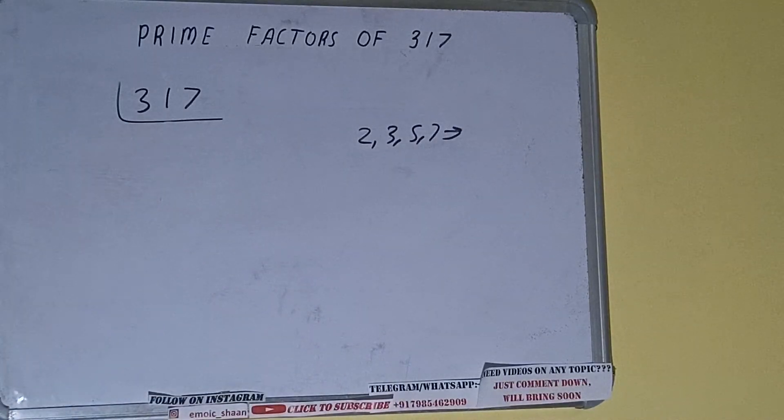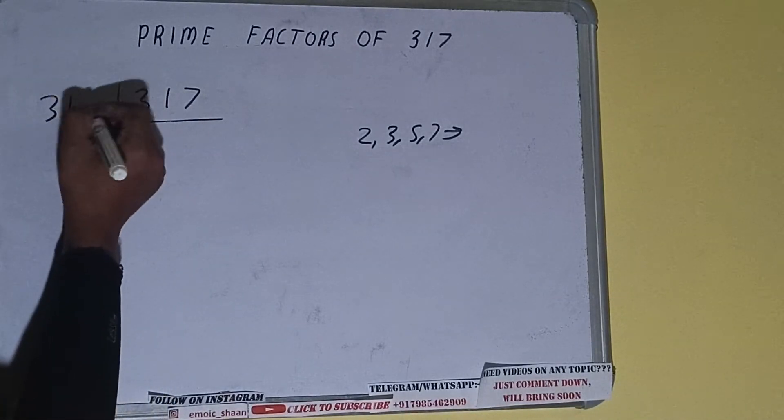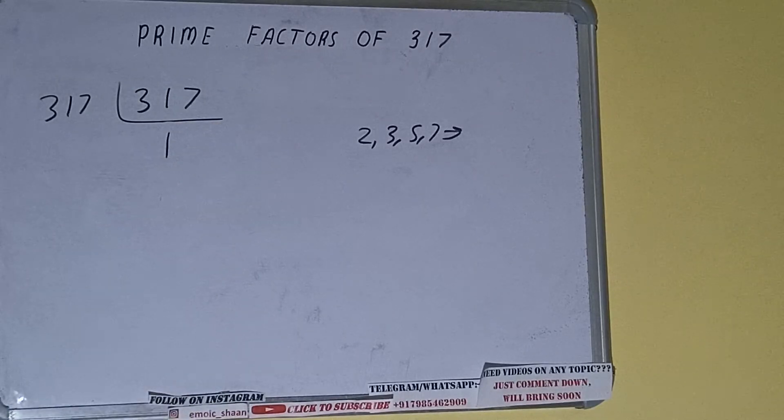So if we talk about the number 317, the number 317 is also a prime number. So it is only divisible by itself, that is 317, and once we do so we'll be getting 1.